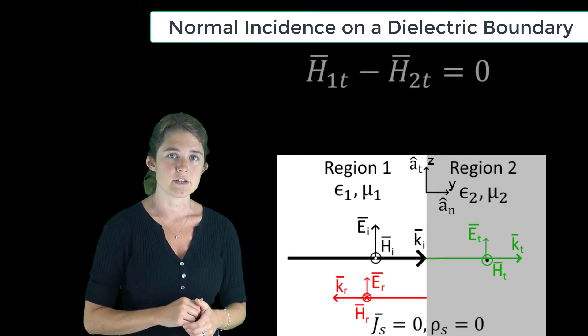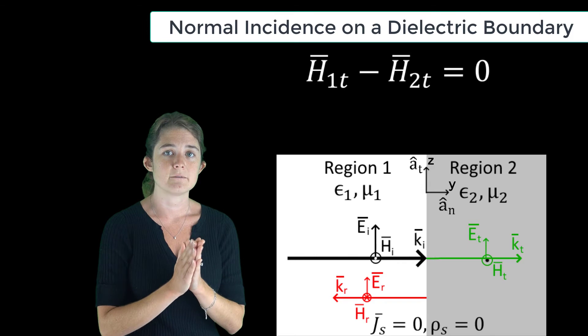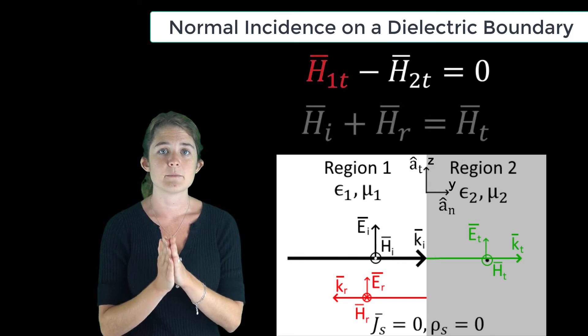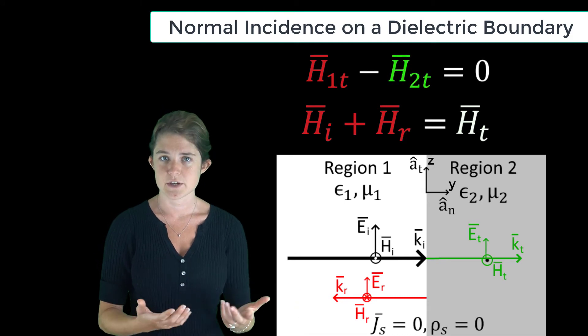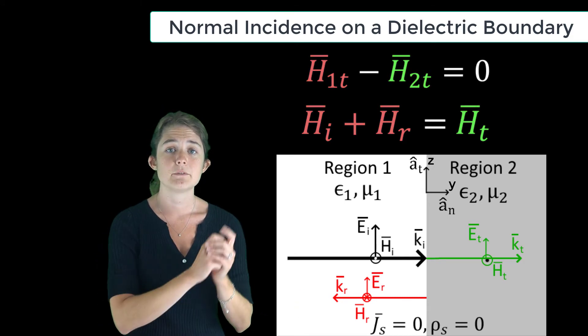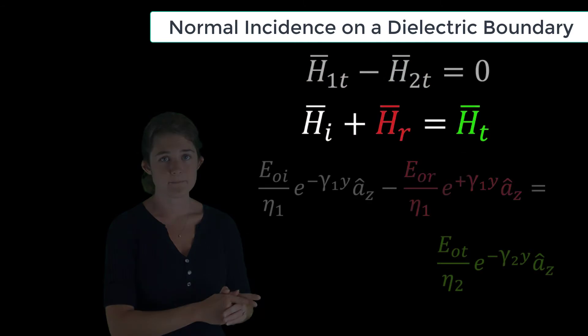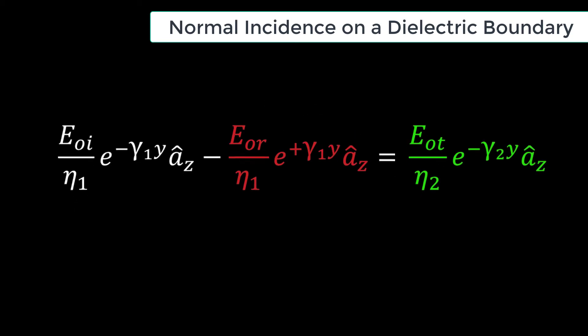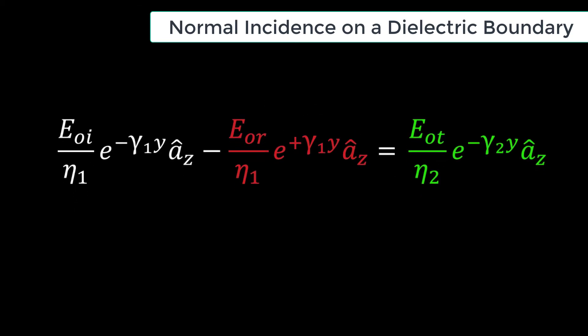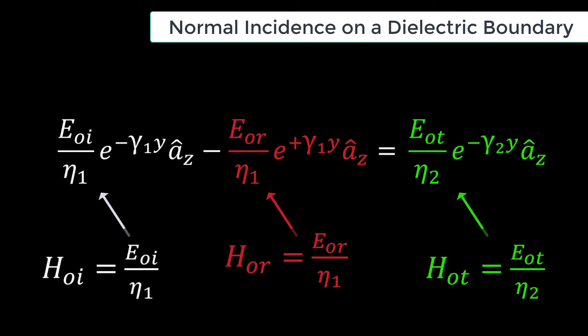Similarly, for the magnetic field boundary condition, the total magnetic field in region 1 is the sum of the incident and reflected magnetic fields, and the total magnetic field in region 2 is just the transmitted wave. We can rewrite this equation using our knowledge of TEM waves, expressing the magnetic field magnitude in terms of the electric field magnitude scaled by the intrinsic impedance of the relevant medium.